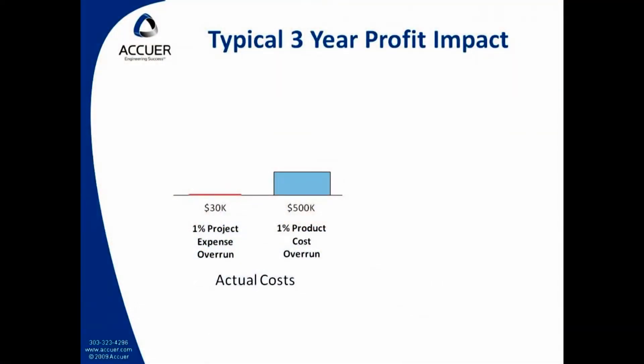Profit is the goal, so let's take a look at the four main variables that affect profit in new product development. The first two are actual costs — money we had and spent — and they show up in the P&L, so you track these very closely. These are project expense and product cost. For example, if a three-million-dollar project goes over by one percent, it reduces your profit by thirty thousand dollars. And if your sales volume was going to be fifty million dollars in three years, an extra one percent on product cost will reduce your profit by half a million dollars.